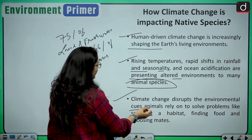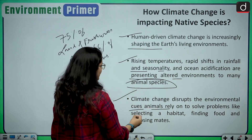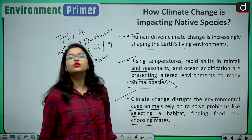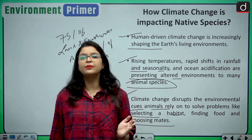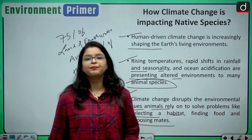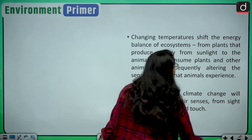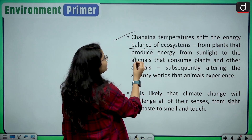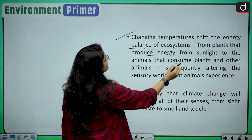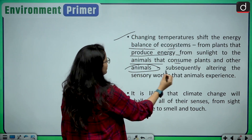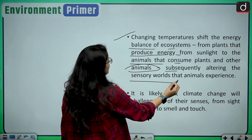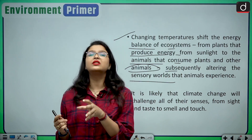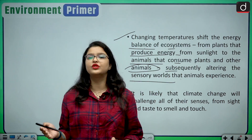Climate change disrupts the environmental cues that animals rely on to solve problems like selecting a habitat, finding food, and choosing mates. Changing temperatures shift the energy balance of ecosystems — from plants that produce energy from sunlight to the animals that consume plants and other animals — subsequently altering the sensory worlds that animals experience and completely disrupting food chains.